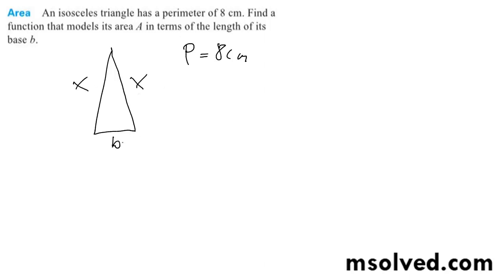And we want to find out its area in terms of the length of its base. So what we can do here is, the perimeter is equal to 2x plus b, and 2x plus b is equal to 8.